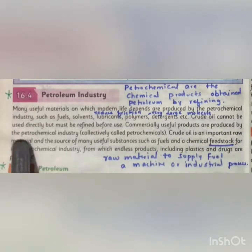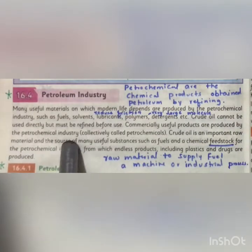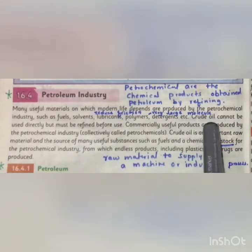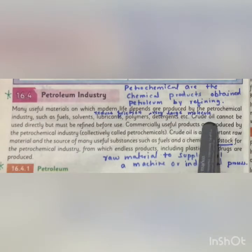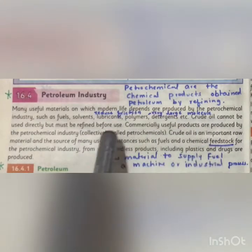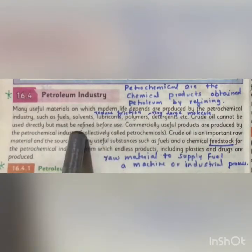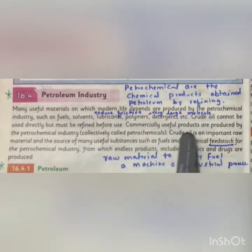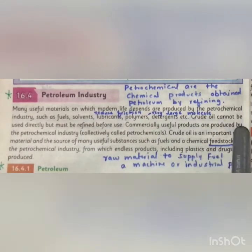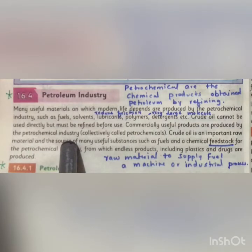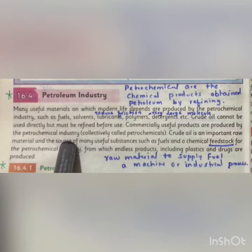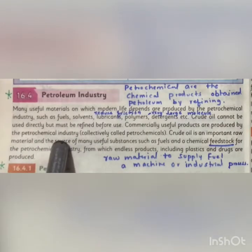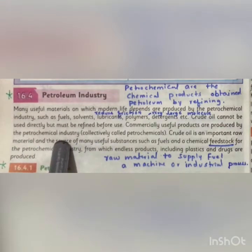Crude oil cannot be used directly but must be refined before use. Commercially useful products are produced by the petrochemical industry. Crude oil کو directly use نہیں کرتے، بلکہ استعمال سے پہلے refine کرتے ہیں، اور petrochemical industry میں useful products تیار ہوتے ہیں۔